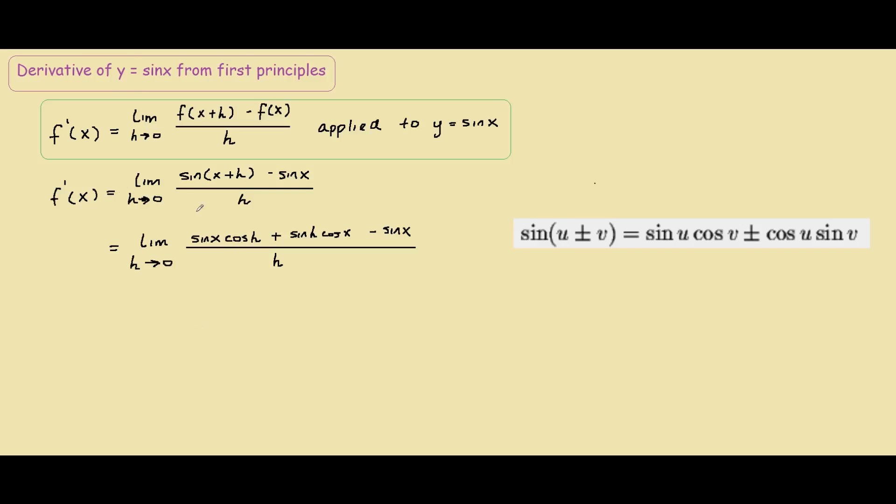We factor out the sin x. All we did was take this sin x and this sin x, take it out. We left cos h here, minus 1 here, and we move the sin h cos x to the right hand side.